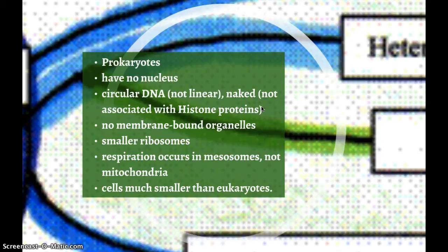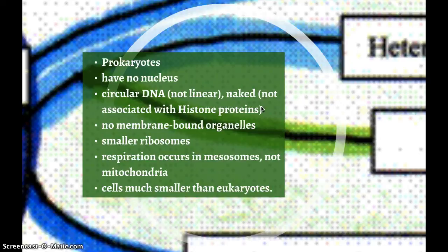Prokaryotes also have different, smaller ribosomes. Respiration occurs in structures called mesosomes, which are made of infolded membrane — so technically not internal organelles. They don't have mitochondria, so respiration happens in these mesosome structures. Prokaryotic cells are also much much smaller than eukaryotic cells.